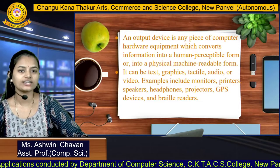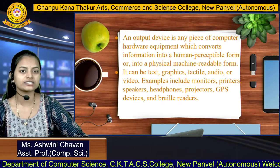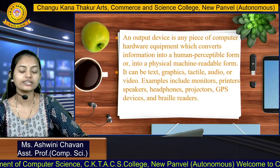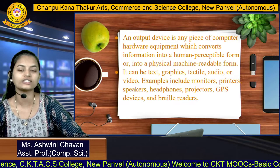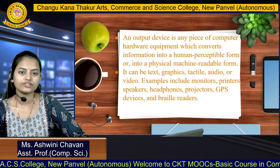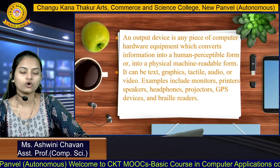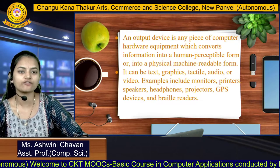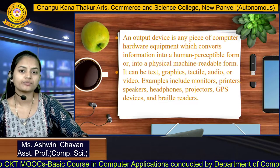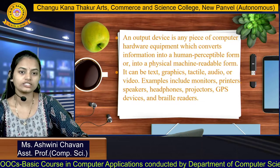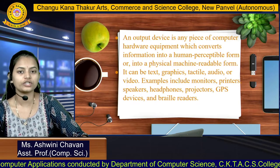An output device is any piece of computer hardware equipment which converts information into a human-perceptible form — meaning it should be easily understandable by human beings. The output can be text, graphics, audio, or video. Examples include monitors, printers, speakers, headphones, projectors, GPS devices, and braille readers.